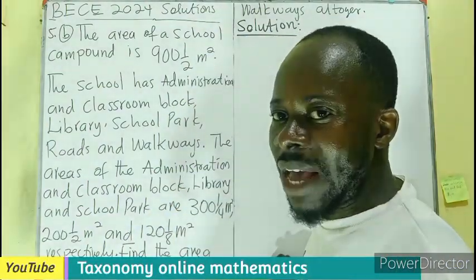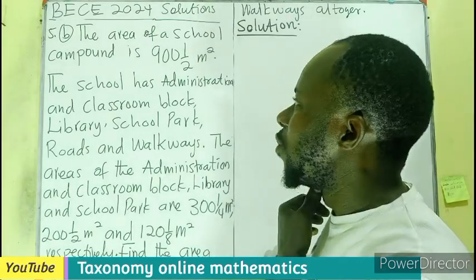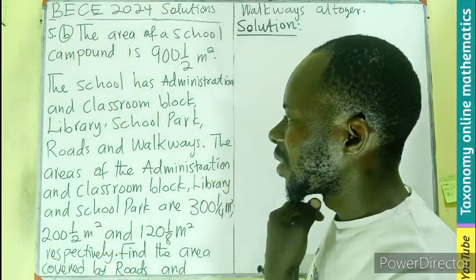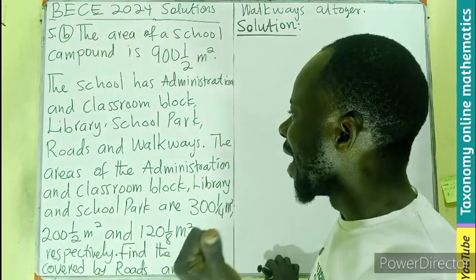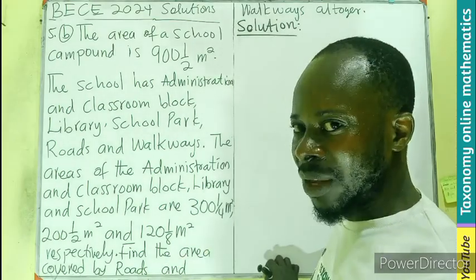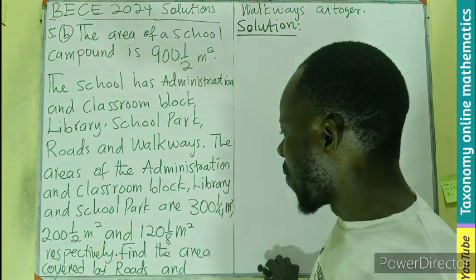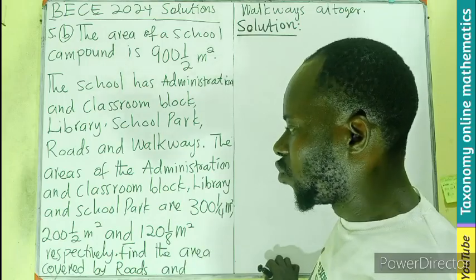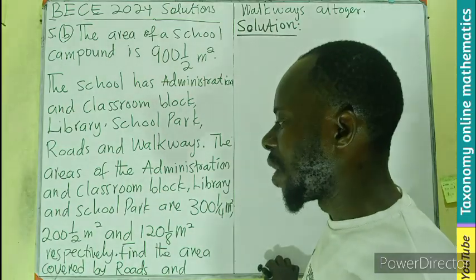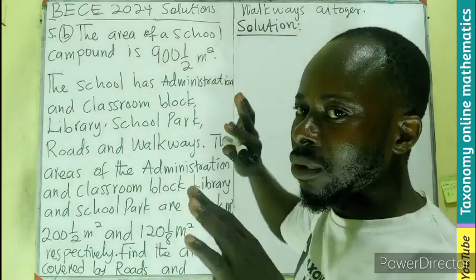Hello, welcome. Question 5B. The area of a school compound is 900 and 1/2 meters squared. The school has an administration and classroom block, library, school park, and roads and walkways. The areas of the administration and classroom block, the library, and the school park are 300 and 1/4 meters squared, 200 and 1/2 meters squared, and 120 and 1/8 meters squared respectively. We have to find the area covered by the roads and walkways altogether.